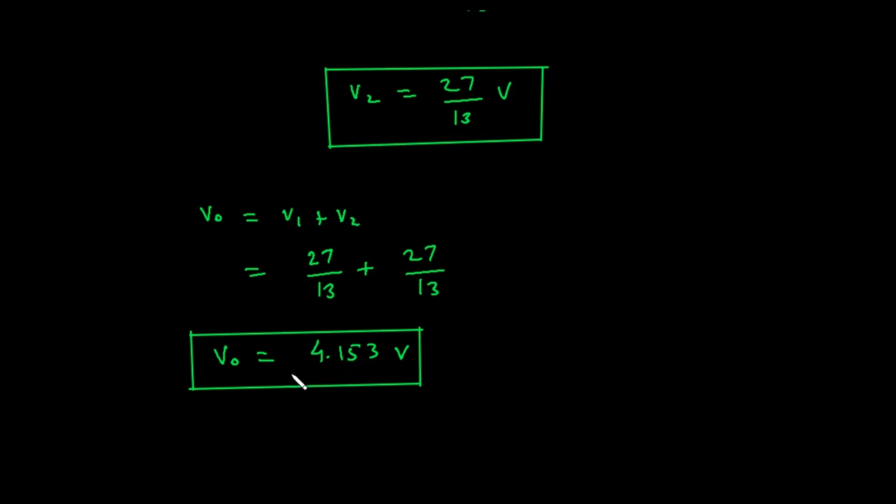To get a decimal value, we can perform the division. 54 divided by 13 is approximately 4.1538. The solution in the image rounds this to 4.153. So, the final answer is that the voltage V0 in the circuit is approximately 4.153 volts.